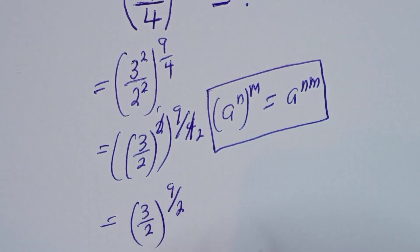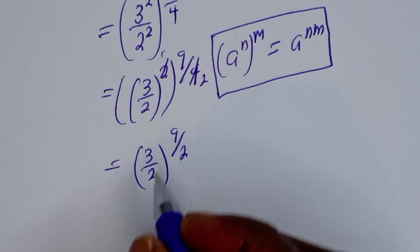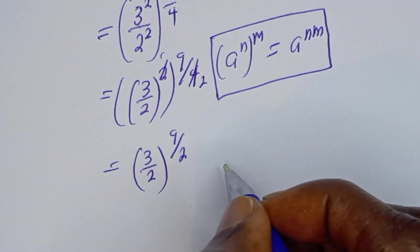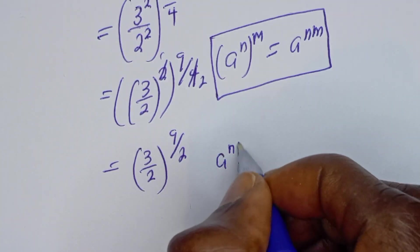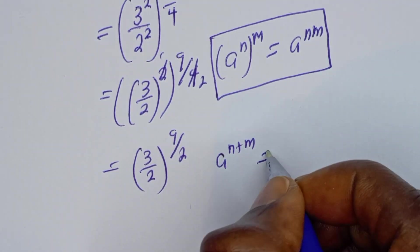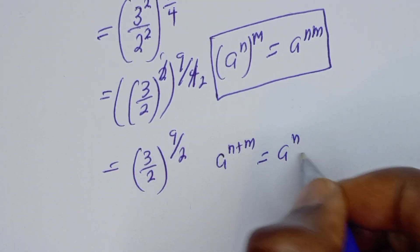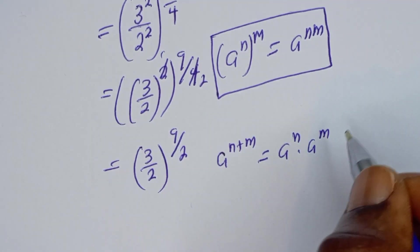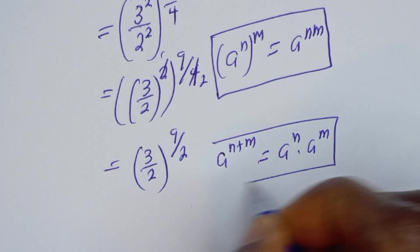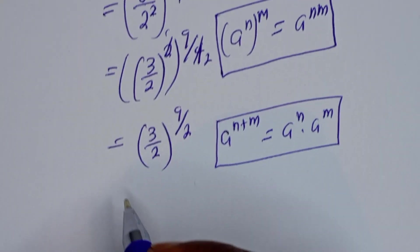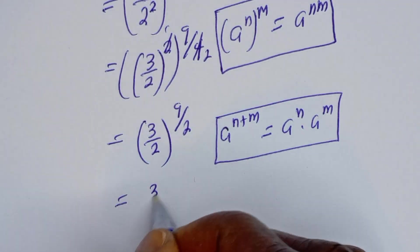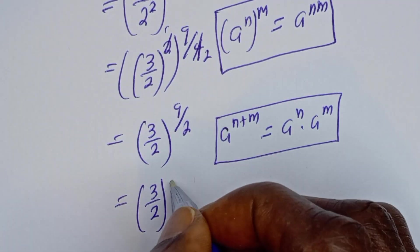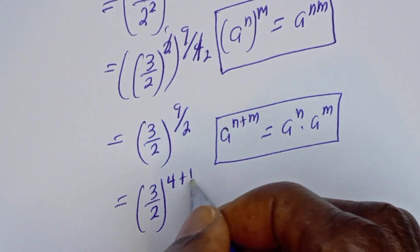Now take note also that if you have a raised to power n plus m, this is equal to a raised to power n multiplied by a raised to power m. So 3 over 2 to the power of 9 over 2 can be rewritten as 3 over 2 to the power of 4 plus 1 over 2.